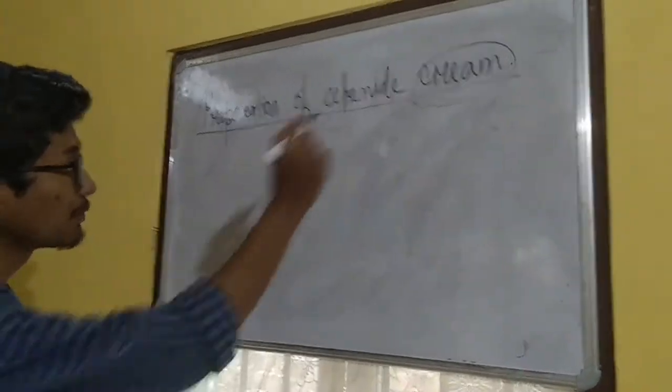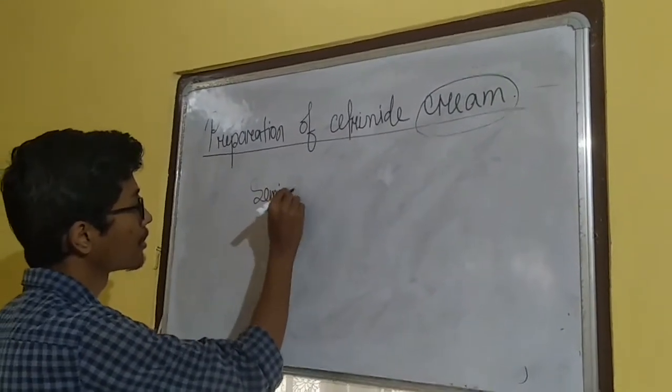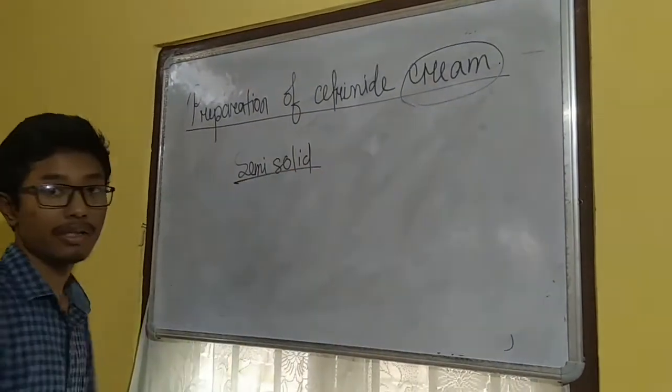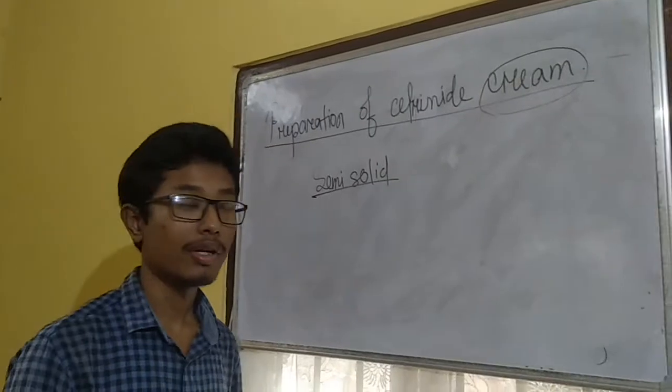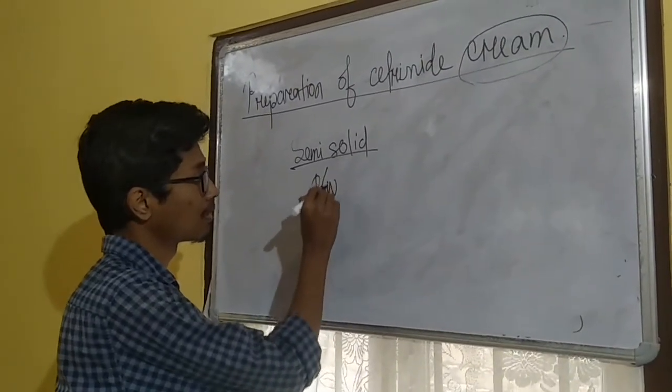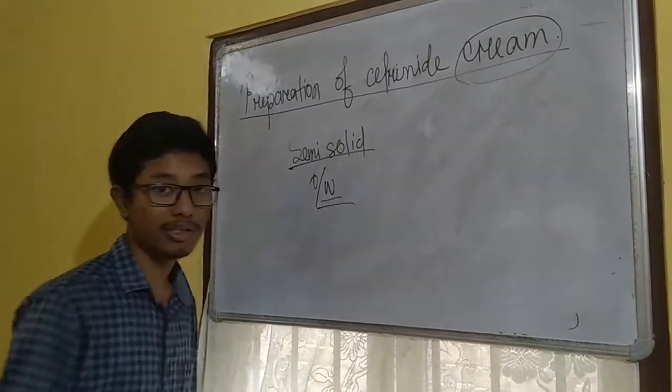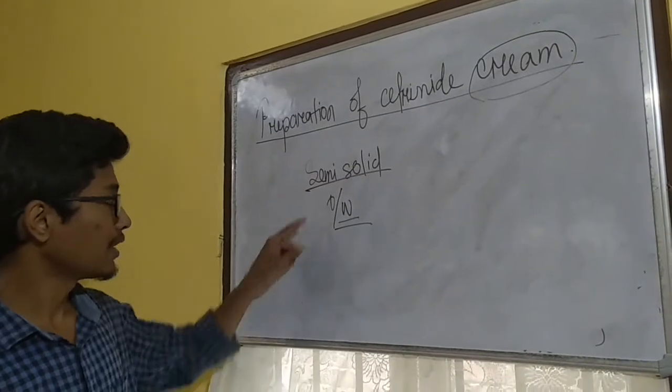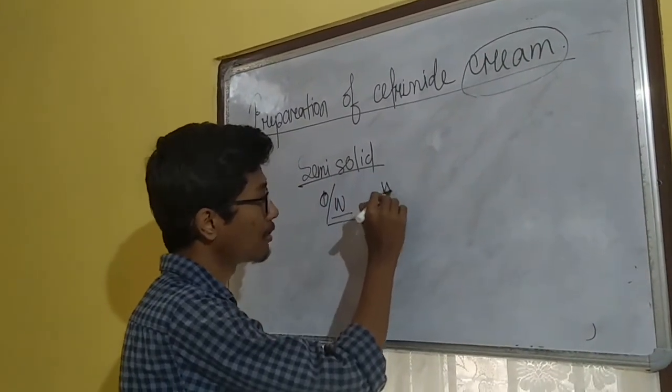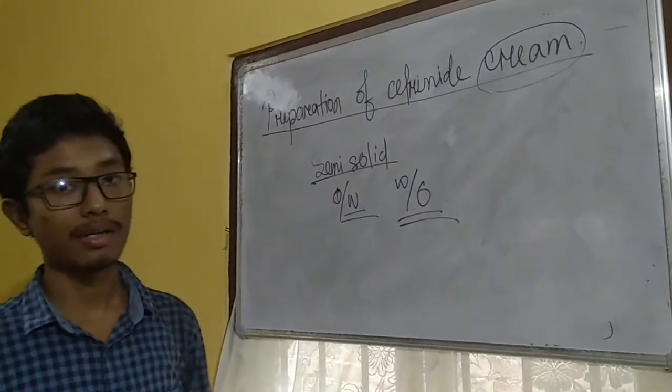Cream is basically a semi-solid dosage form. There are two types of cream: O/W where water is the continuous phase, and W/O type of cream where oil is the continuous phase.